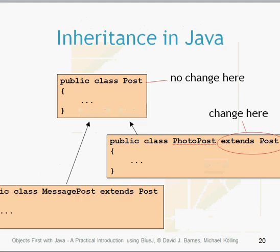So how do we implement this inheritance? We need to create our Post class which takes in all the common attributes from the previous two posts. There's no new terminology or keywords for the superclass itself - that's pretty much the same. The changes come when we implement the subclasses. If a class is a subclass of a specific superclass, it needs the `extends` keyword at the start of the class declaration. So PhotoPost uses `extends Post` and MessagePost also needs `extends Post`.